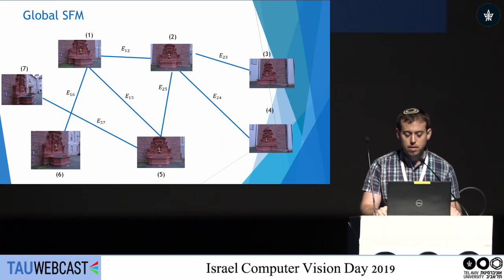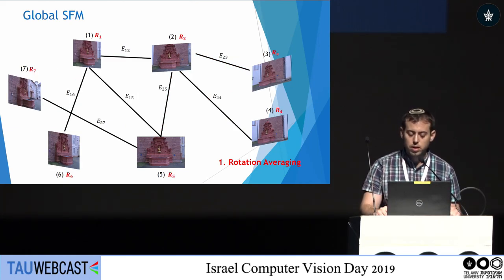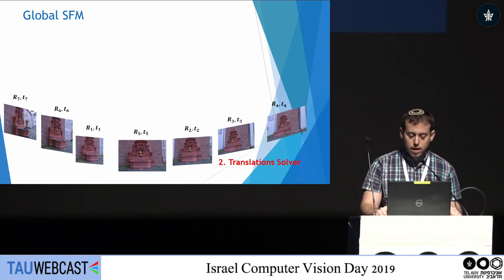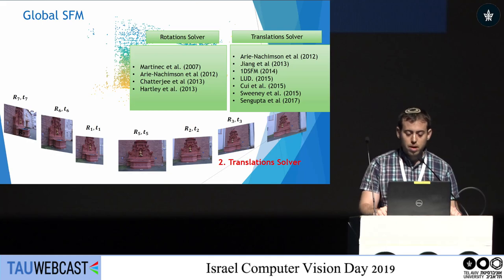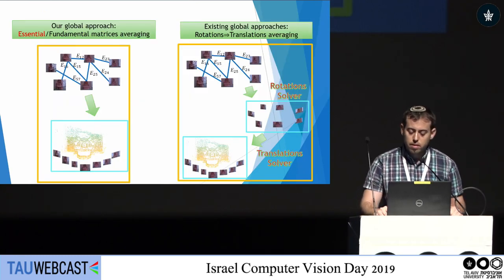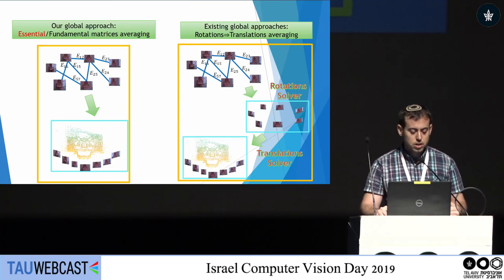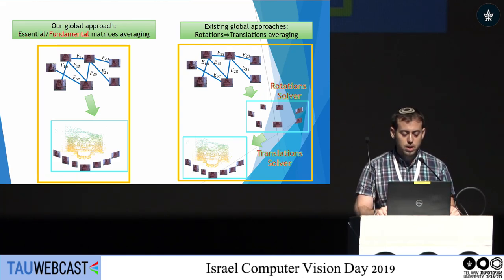Global structure from motion starts with essential matrices, extracts relative rotations, and the first step — rotation averaging — averages them to absolute global rotations. Then, using the solved rotations and relative translations, translation solvers compute the global translations. Finally, 3D points are triangulated followed by a one-time bundle adjustment. We would like to avoid these two separate steps and instead directly average noisy essential matrices to camera matrices. Additionally, ours is the first global approach that can average fundamental matrices.